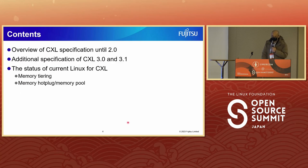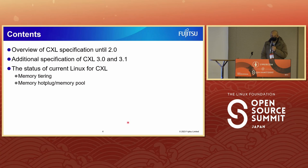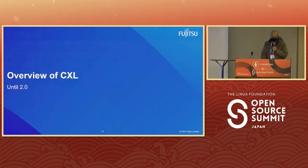Here is today's contents. First I'll talk about an overview of the CXL specification up to version 2.0, and additional specifications of CXL 3.0 and 3.1. Finally, I'll talk about the status of current Linux for CXL — memory tiering and memory hotplug for memory pool.